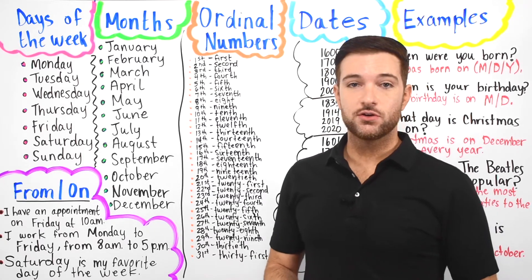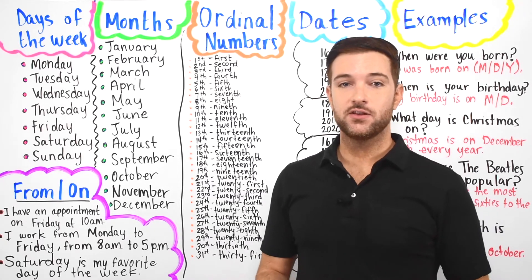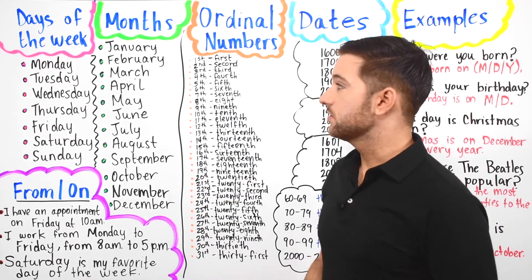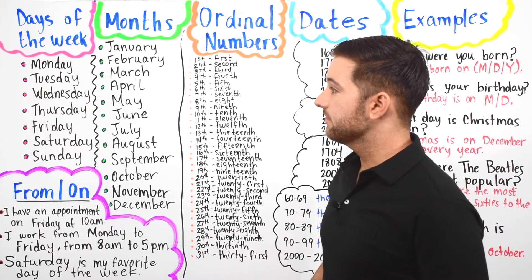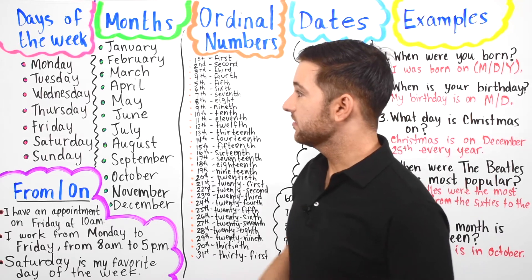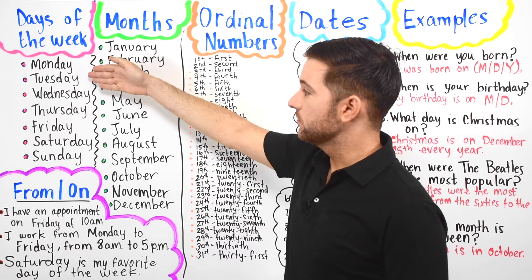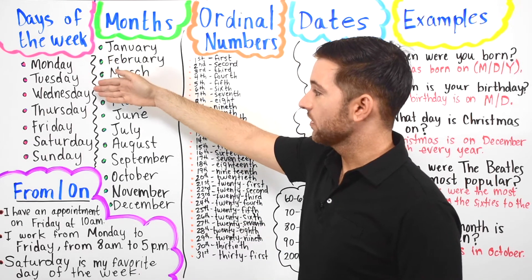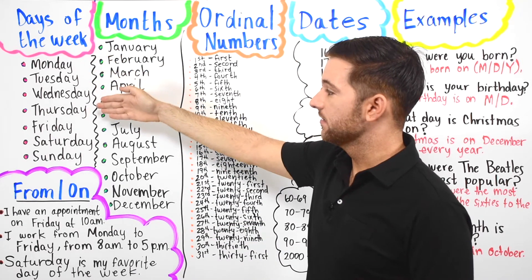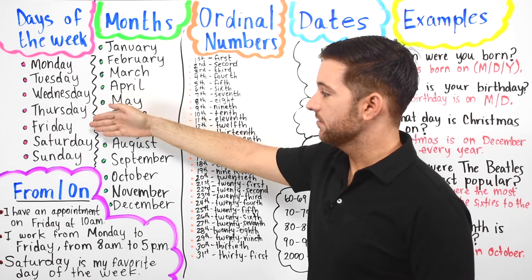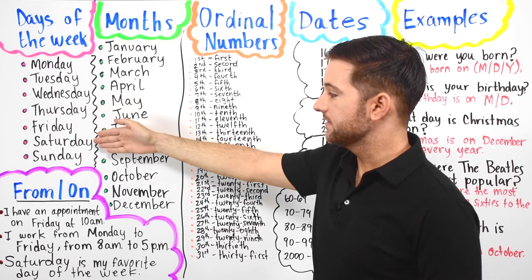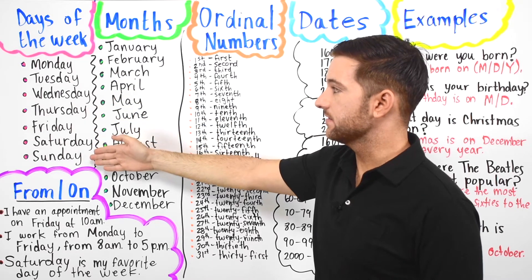First, we're going to go over the days of the week. The days of the week in English are Monday, Tuesday, Wednesday, Thursday, Friday, Saturday, and Sunday.